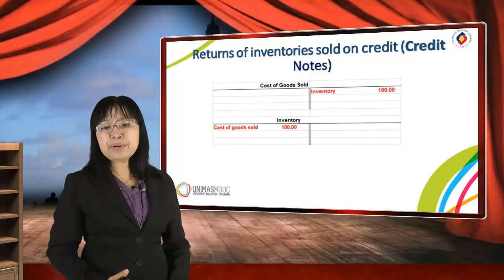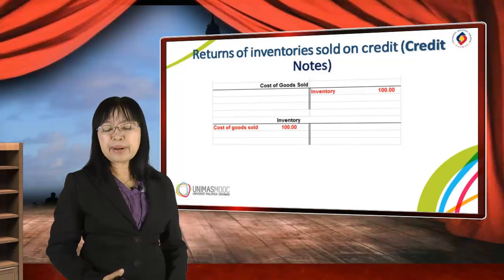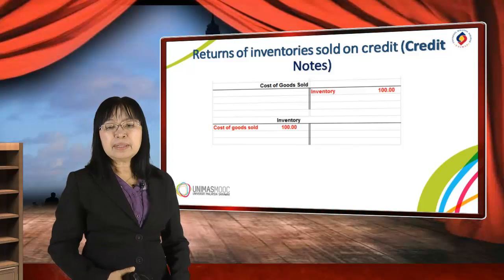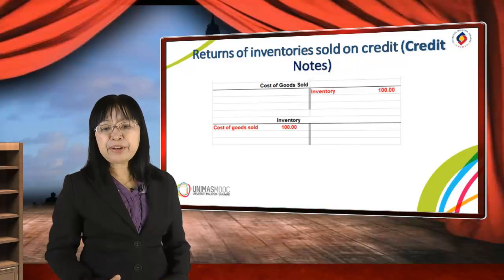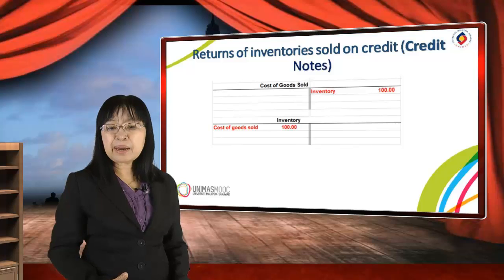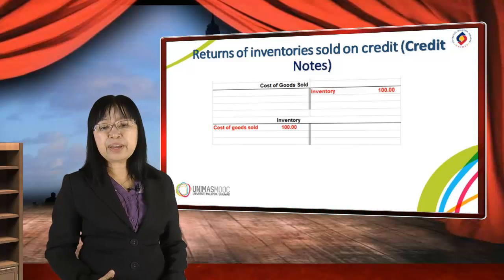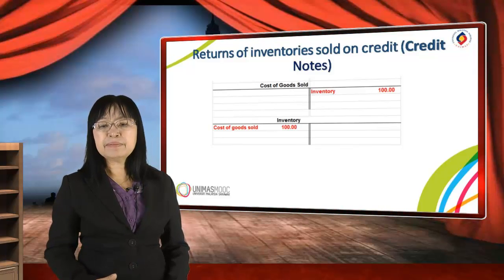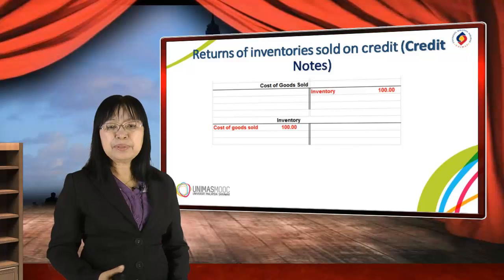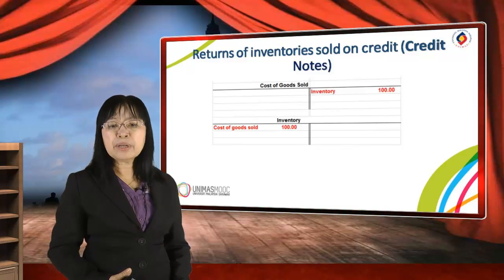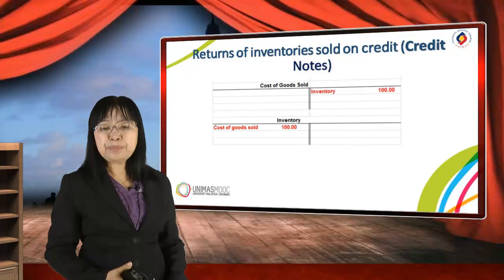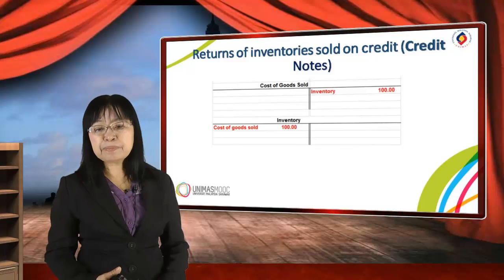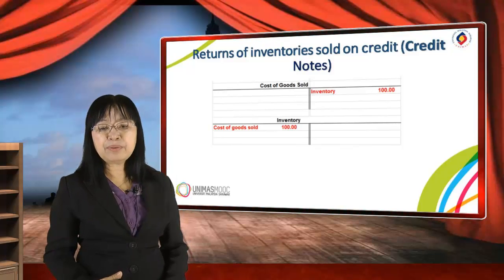Continuing with returns of inventory sold on credit — the credit note. Now let's record in the inventory accounts. We receive the inventory back, so the inventory account will be debited by RM100 at net value. The cost of goods sold account will be decreased by entering a credit of RM100. This shows how the cost of goods sold is decreased and the inventory account is increased by RM100.